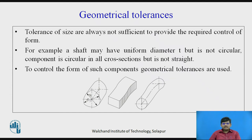To control drawbacks related to form, we need to go for geometrical tolerances. In addition to dimensional tolerances, we go for geometrical tolerances, which deal with the forms and shapes of the components. Dimensional tolerances address the size of the component, whereas geometrical tolerances address the form or shape.